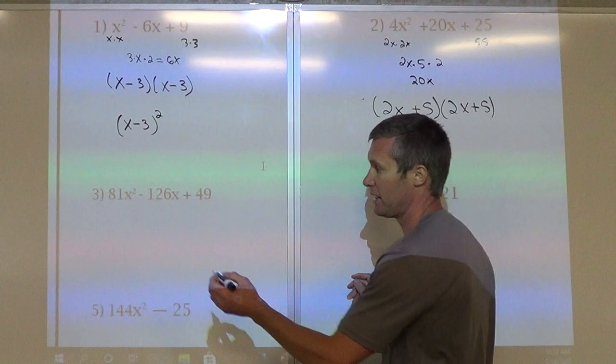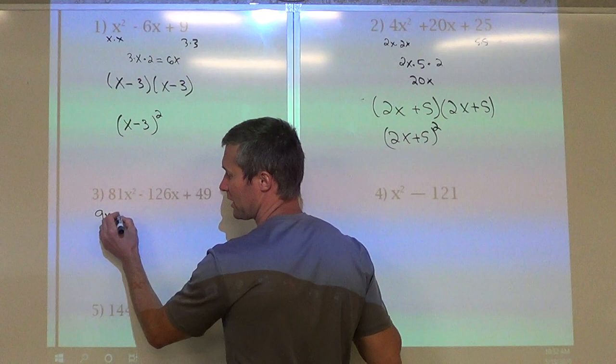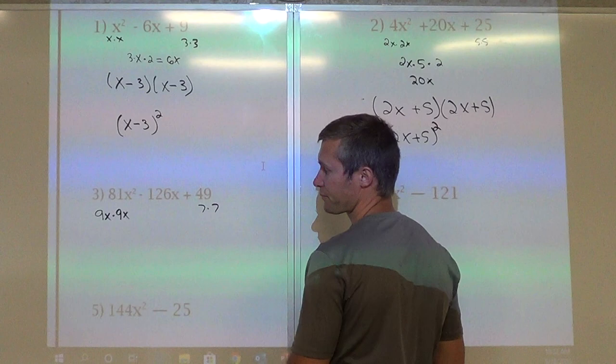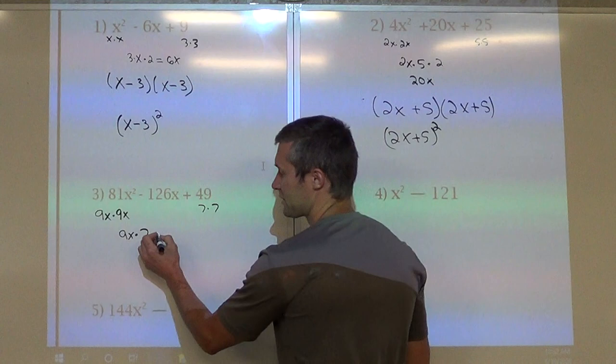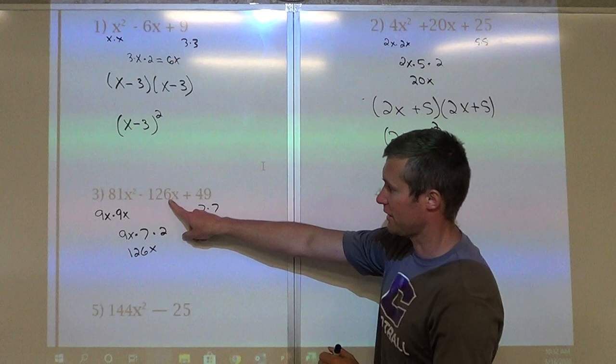81 is 9 times 9, and x squared is x times x, so it's 9x times 9x. 49 is 7 times 7. So now we multiply 9x times 7, that's 63, times that by 2, which would be 126x. That's what it should be.